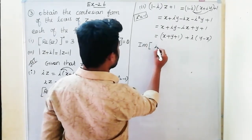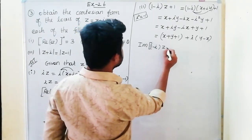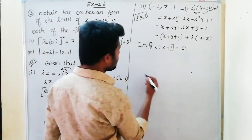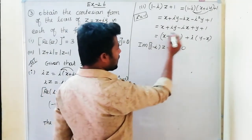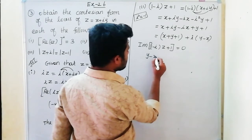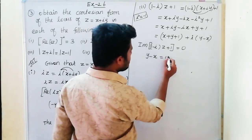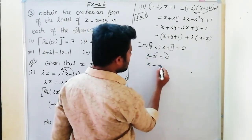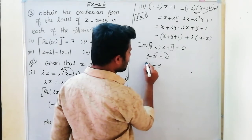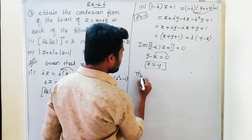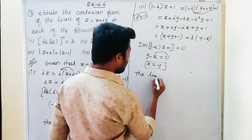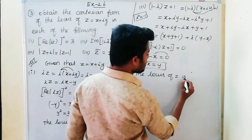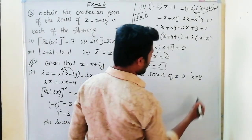Now 1 minus i into z plus 1 is equal to 0. The imaginary part gives y minus x equal to 0, so x equals y. Therefore, the locus of z is x equal to y.